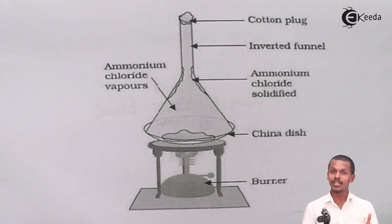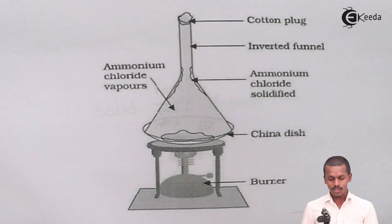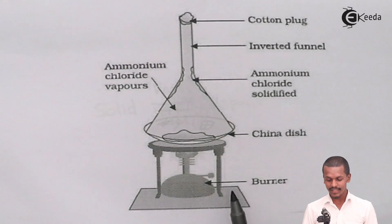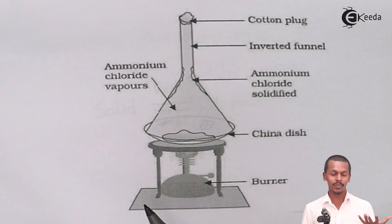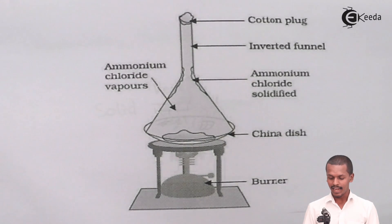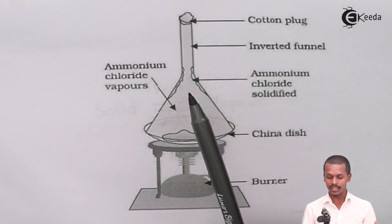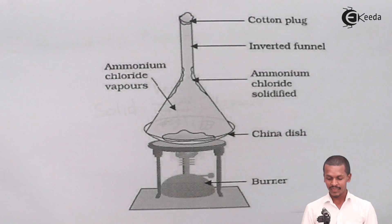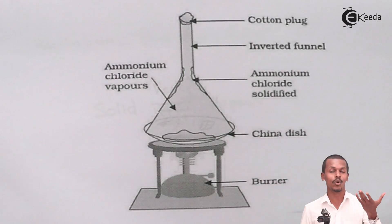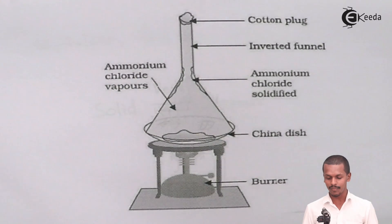This is the total setup of the sublimation process. Suppose we have taken a mixture of ammonium chloride and NaCl. We have a burner and we keep the mixture in a China dish, which we cover with an inverted funnel. A cotton plug is used to cover the top so that the gas does not escape.